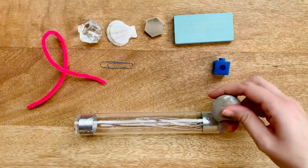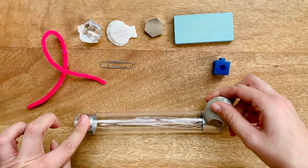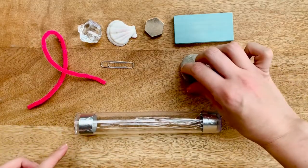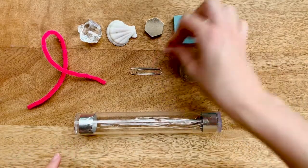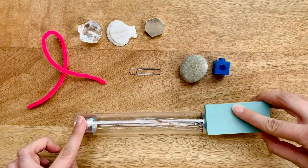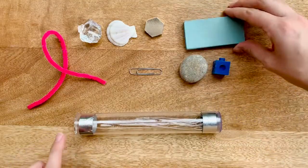The plastic cube is an insulator. The rock is an insulator. The paper clip is a conductor. Wood block, insulator.